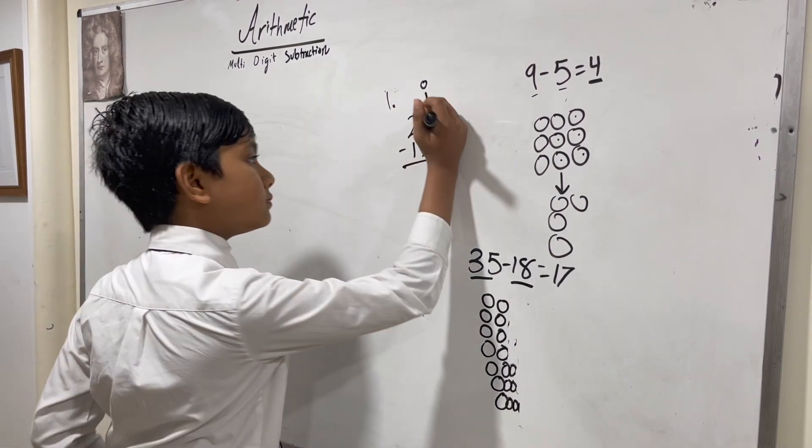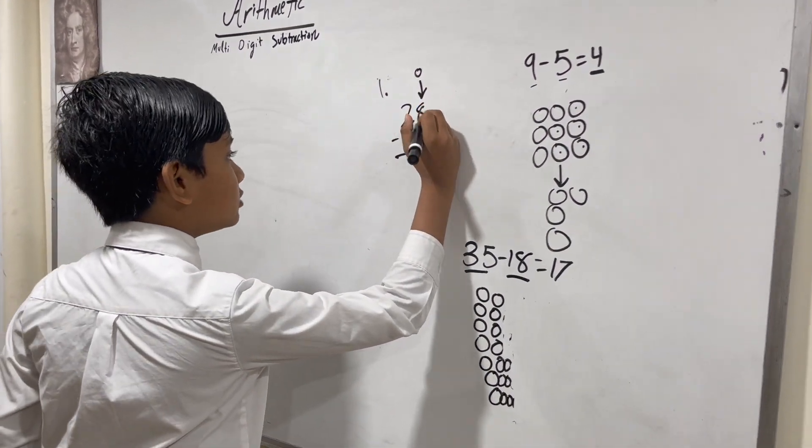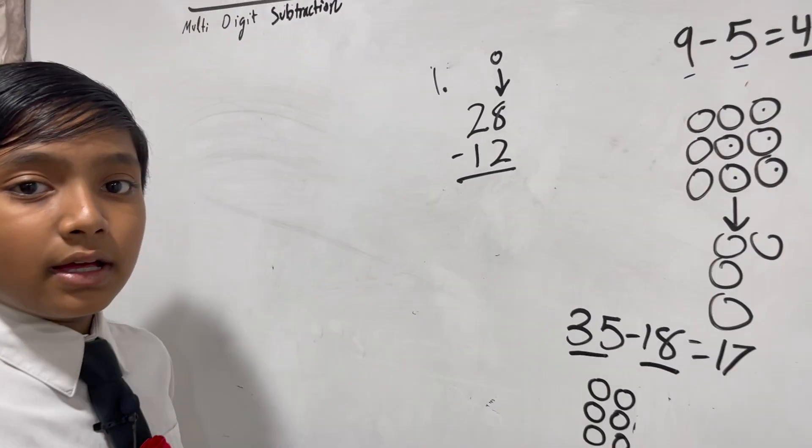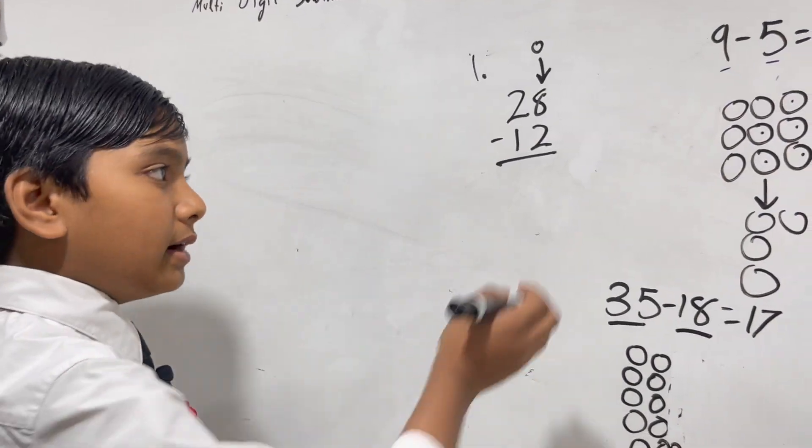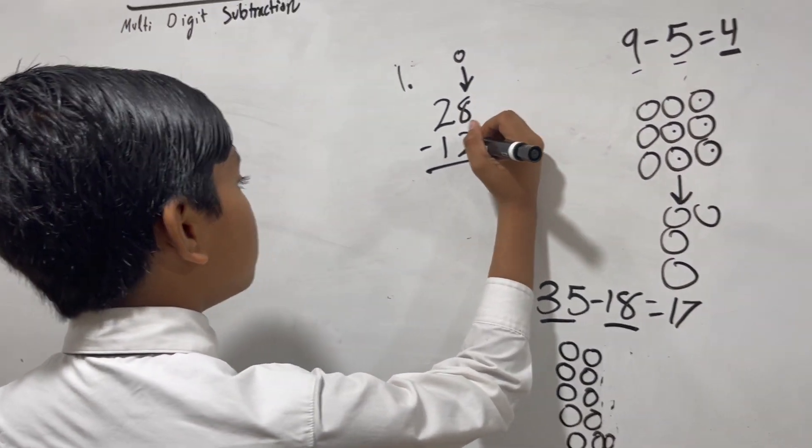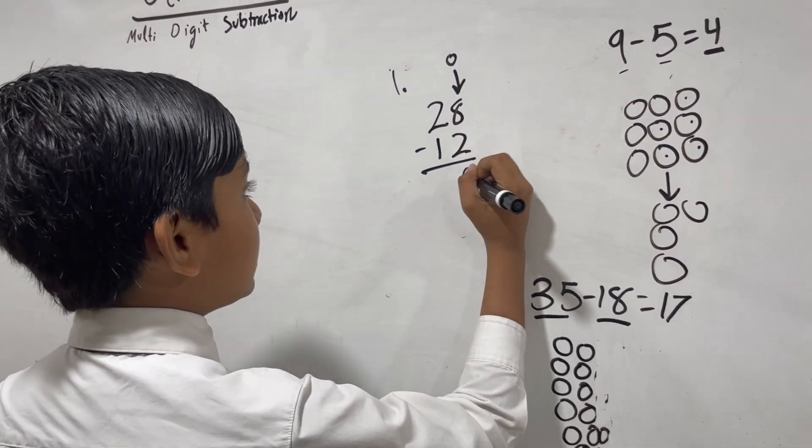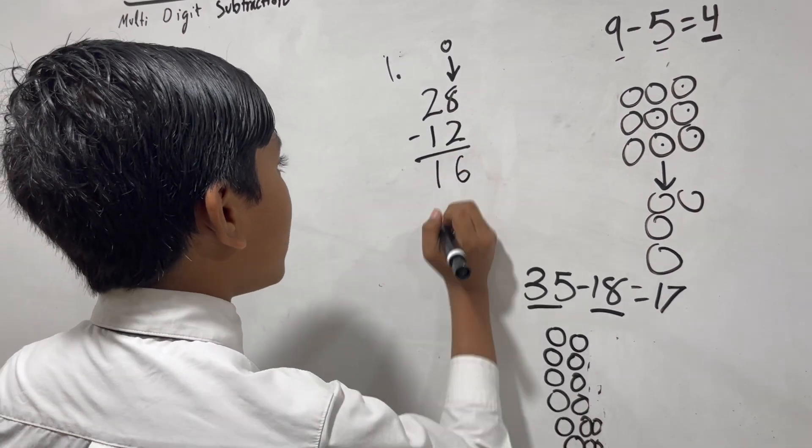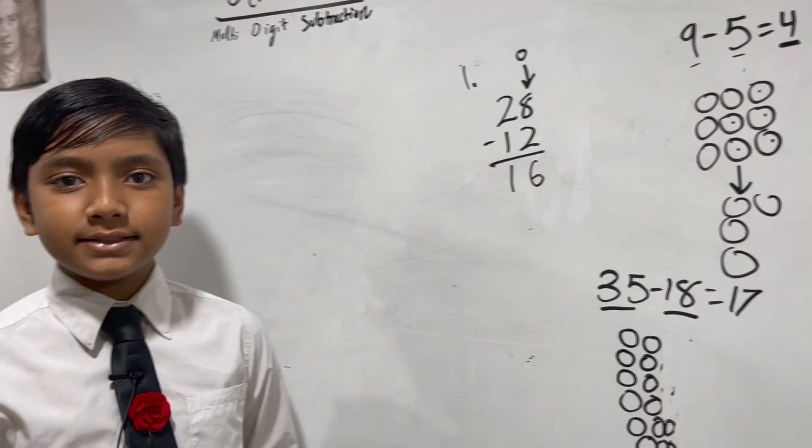Now all we need to do is the same thing as addition but using subtraction. So instead of 8 plus 2, we would do 8 minus 2 equals 6. 2 minus 1 is 1. So 28 minus 12 is 16.